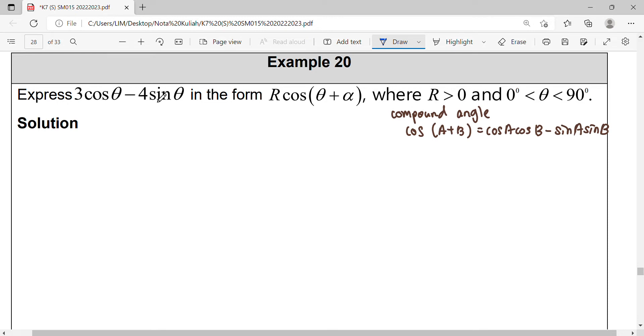So we have to express it in the form of R cos(θ + α). For the first step, we're going to use the compound angle formula for cos, where cos(A + B) equals cosA cosB minus sinA sinB. Multiply with R together, so it will be R cosA cosB minus R sinA sinB, where B is α. Then you can start to compare.